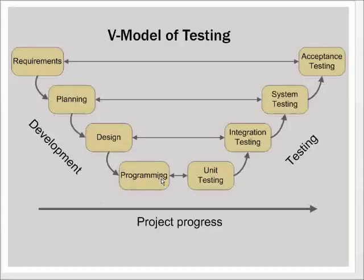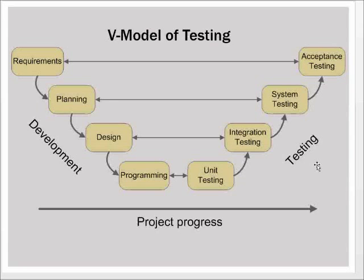To work with these phases, there are different types of testing work. For example, programming is checked by unit testing. The design work — the architectural design — is tested by integration work. Planning work is tested by system testing. The gathered requirements and decisions are tested by acceptance testing, which ensures everything works as intended. All these different testing activities are matched to some activity of development.